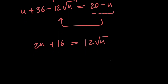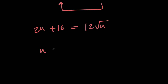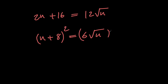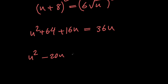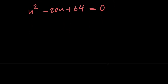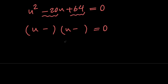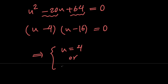Both sides are divisible by 2, giving u plus 8 equals 6 times the square root of u. Squaring both sides: u squared plus 16u plus 64 equals 36u. Moving everything to one side forms the quadratic u squared minus 20u plus 64 equals 0. Factoring, we find two negative numbers that add to −20 and multiply to 64: namely −4 and −16, giving u equals 4 or u equals 16.